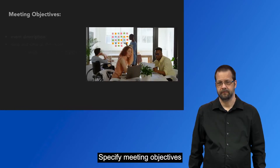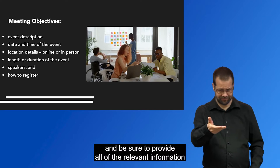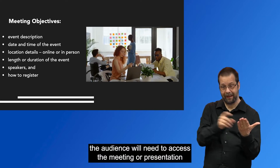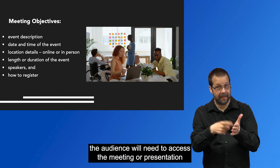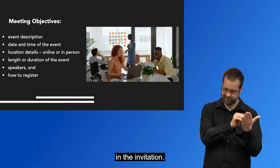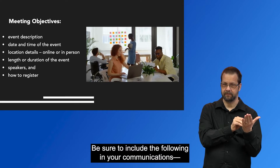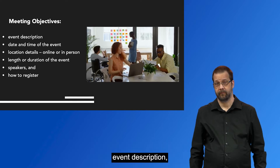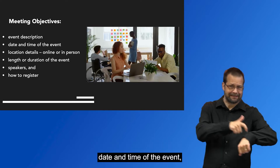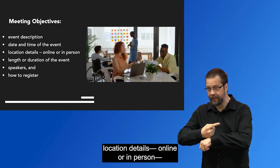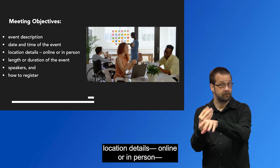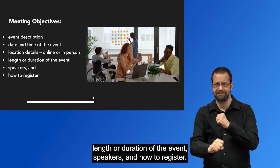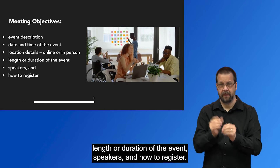Specify meeting objectives in your meeting announcement or invitation and be sure to provide all of the relevant information the audience will need to access the meeting or presentation in the invitation. Be sure to include the following in your communications: event description, date and time of the event, location details (online or in person), length or duration of the event, speakers, and how to register.